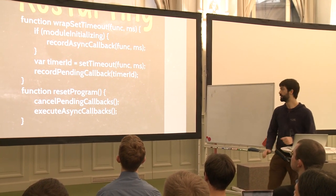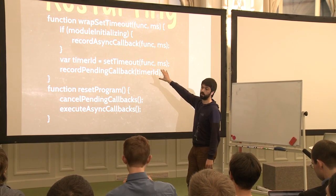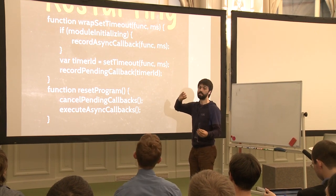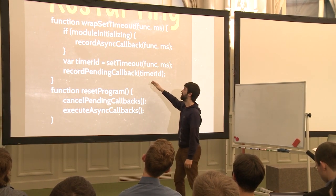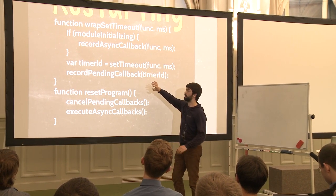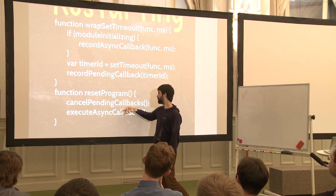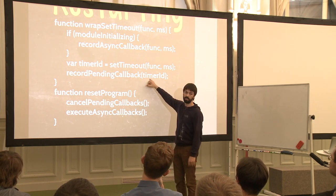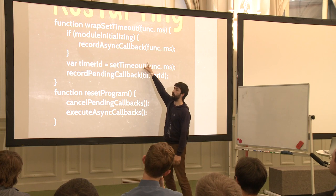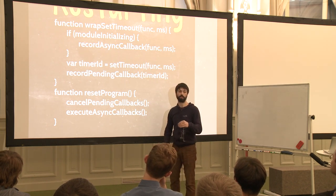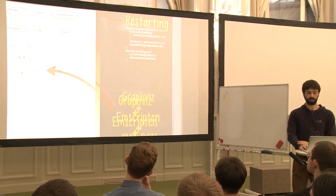Restarting is also pretty simple. You have to wrap setTimeout to support FPS. If we're doing module initialization — meaning FPS is setting its first callback — then we want to record those callbacks. If we're not initializing, we don't need to record anything. We need to record the timer ID, and when we reset the program we need to cancel all pending callbacks so no more callbacks from the old program come when we start the new one. Then we re-execute all of the callbacks that were attached when the module initialized. As far as the module is concerned, it was just initialized — it runs as if the browser had just refreshed.